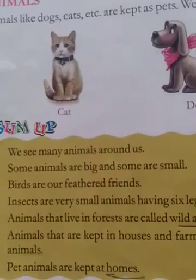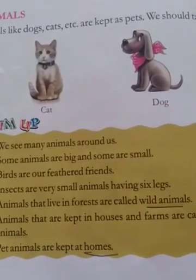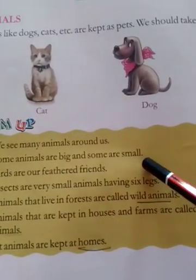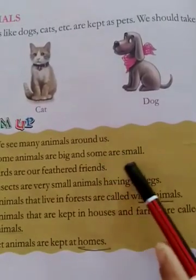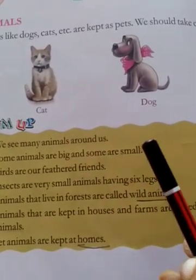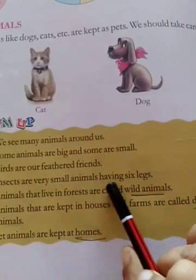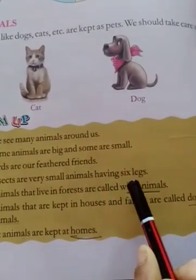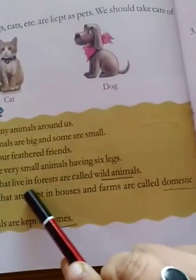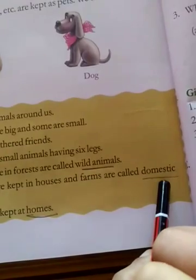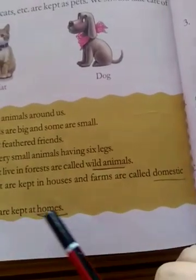So the summary of this lesson is: we see many animals around us. Some animals are big like elephant, giraffe, tiger, lion, and some animals are small like rabbit and dog. Birds are our feathered friends and insects are very small animals having six legs. Animals that live in a forest are called wild animals. Animals that are kept in the house and farms are called domestic animals.